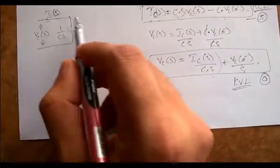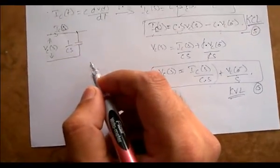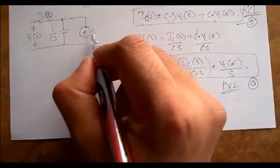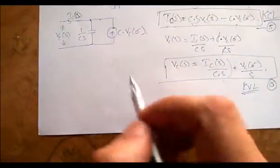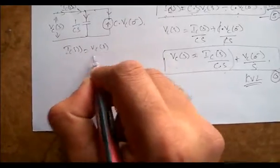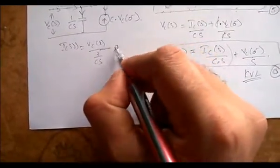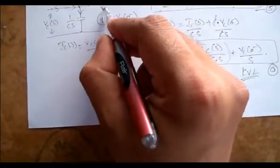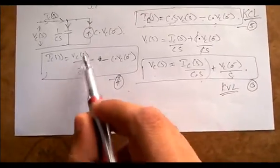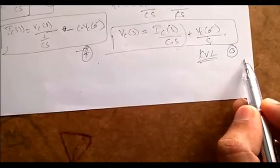The current direction is entering, and the source C·Vc(0⁻) is opposing — so it enters in the opposite direction. To verify: entering current equals leaving current. IC(s) entering equals VC(s)/(1/Cs) minus C·Vc(0⁻). The seventh and fifth equations are the same — verified.